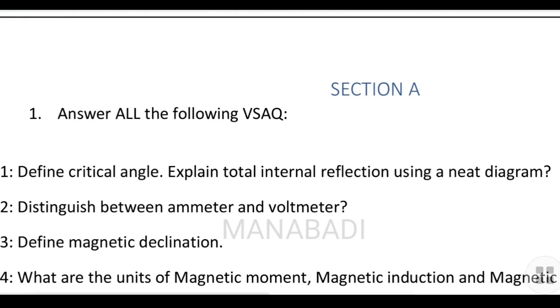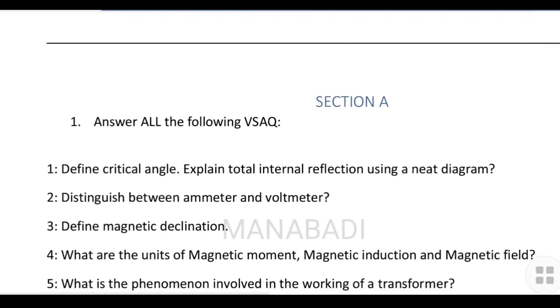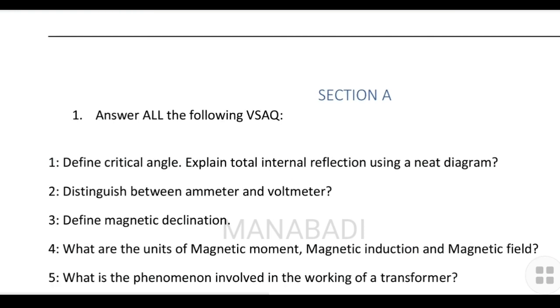Define critical angle and explain total internal reflection using a neat diagram. Total internal reflection is when we see phenomena like mirages and rainbows. Distinguish between ammeter and voltmeter.